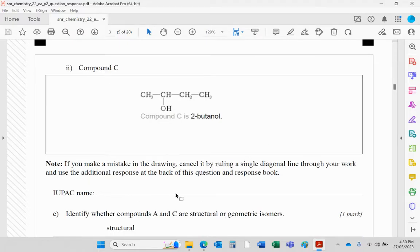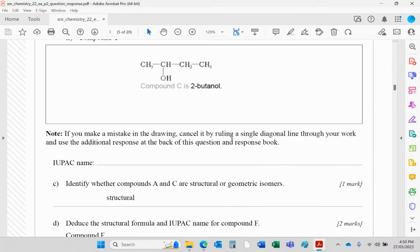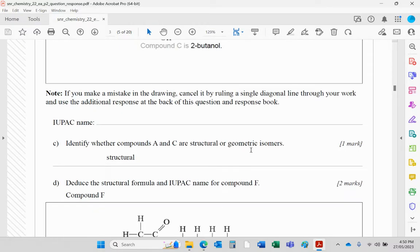That should go there. 2-butanol or butan-2-ol. These are structural isomers, of course. Geometrical isomers will happen with double bonds and different arrangements on either side of the double bond. But these are clearly different structures, so they're structural isomers. Structural formula and IUPAC name—that stands for International Union of Pure and Applied Chemistry.